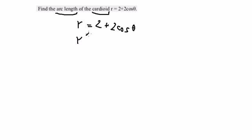We need to find the first derivative of this one, so you get negative 2sin(θ). We know that this should be from θ = 0 to 2π, and now the formula should be in here.